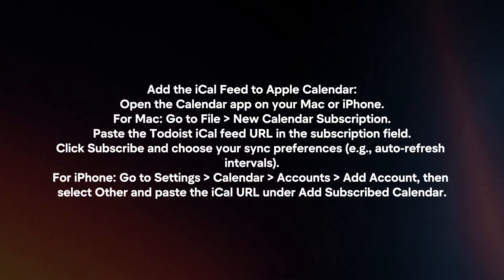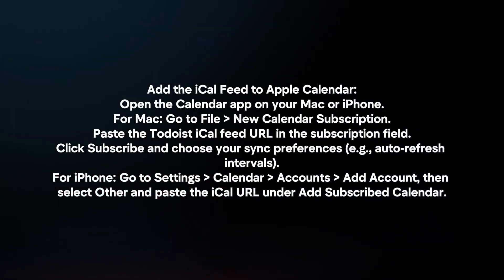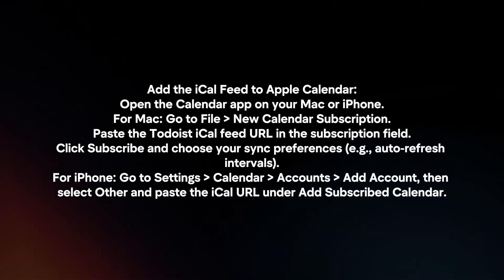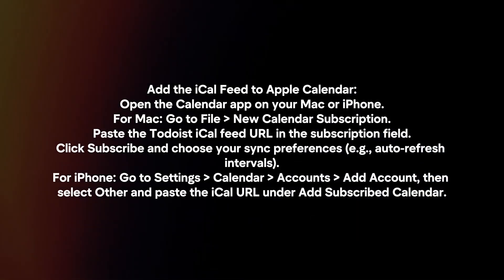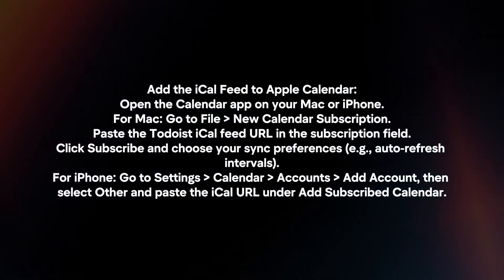For iPhone, go to Settings, then Calendar, then Accounts, then Add Account. Select Other and paste the iCal URL under Add Subscribed Calendar.